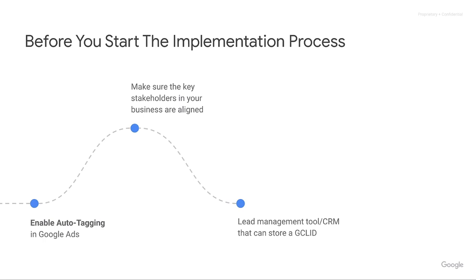You also need a lead management tool or CRM that can actually store the Google Click ID. This GCLID is up to 120 characters. In the vast majority of cases, CRMs can manage and store up to 120 characters in a single field. However, in about 1% of cases, some CRMs are not able to hold this many characters. If your CRM can only hold 80 characters and the GCLID is 120 characters, it will truncate it and create an error when you try to import it back into Google Ads. Please ask your CRM administrator: can our system hold up to 120 alphanumeric characters in this field?